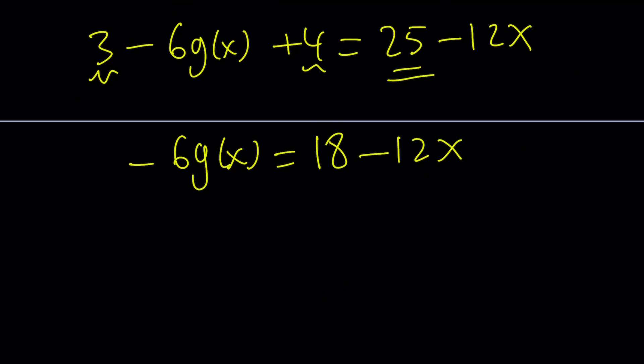And I got this. And then, I could divide both sides by negative 6, right? Negative 6 cancels out and I end up with g of x.